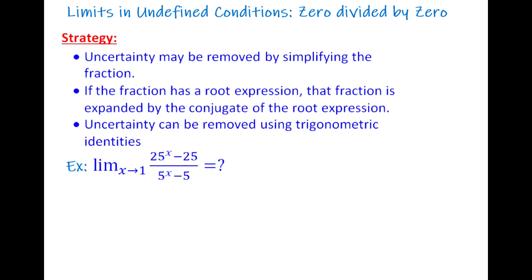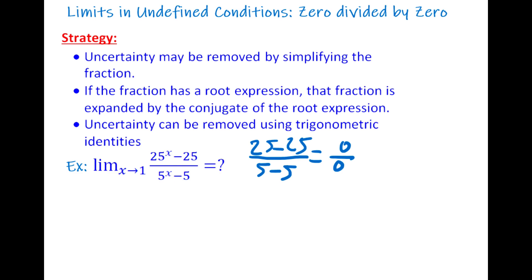The next question: when x goes to 1, find the limit of (25^x - 25) divided by (5^x - 5). Plugging in x = 1 gives 25 - 25 divided by 5 - 5, which is 0 divided by 0. So we have an undefined condition again and need to simplify.